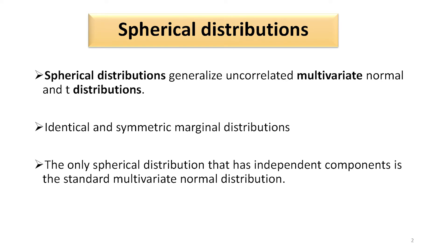Let us first look at the spherical distributions. Spherical distributions generalize uncorrelated multivariate normal and t distributions. In spherical distributions, the marginal distributions will be identical and symmetric. The only spherical distribution which has independent component random variables is the standard multivariate normal distribution.